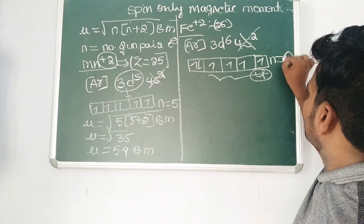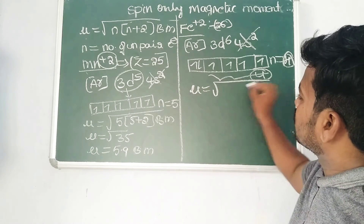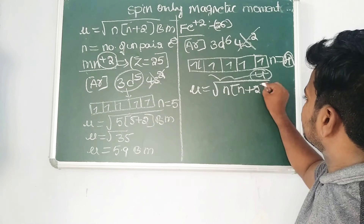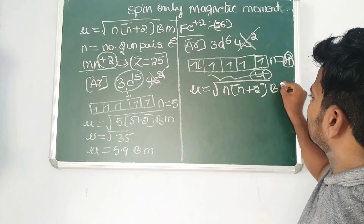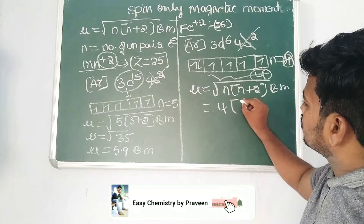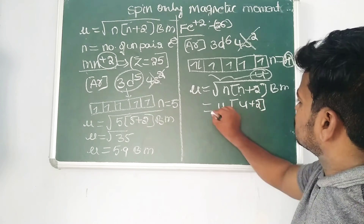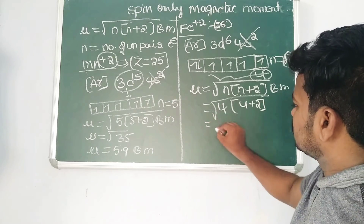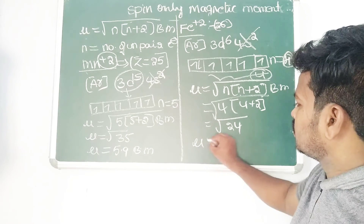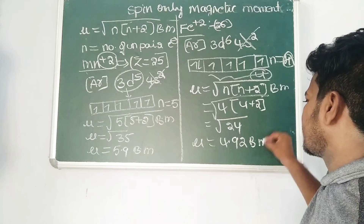So n = 4. Therefore mu = root of n(n+2) = root of 4(4+2) = root of 24, which equals 4.92 Bohr magnetons.